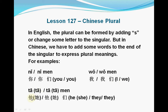Another example: 他 (tā) — this is a man. 她 (tā) — this is a woman. 他 or 她 is the singular. 他们 or 她们 is the plural. So we add 们 (men) to make it plural.